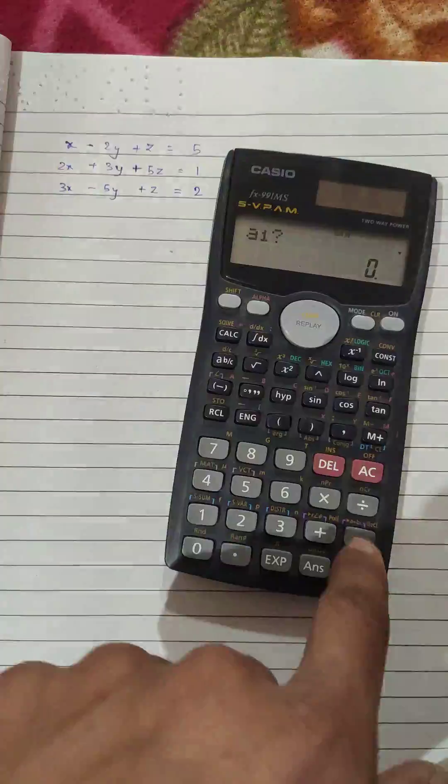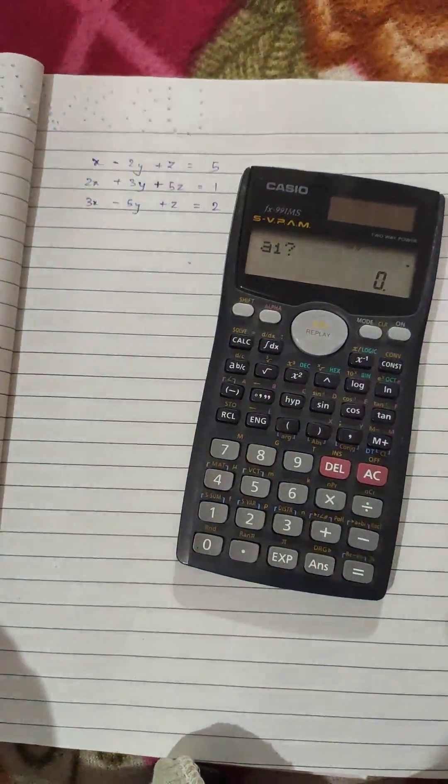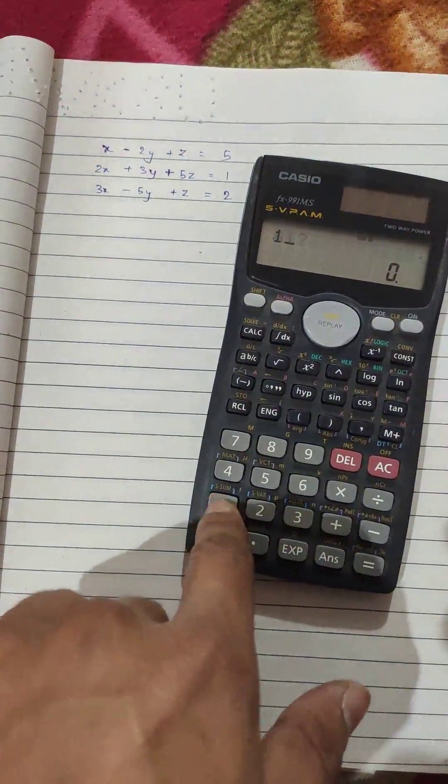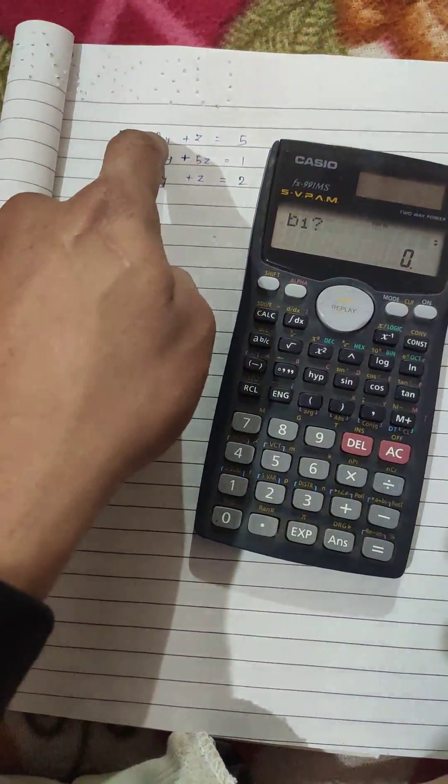Now a1, this is the a1. A1 is one. What is b1? B1 is here, minus two. And c1 is one. D1, this is d1, five.